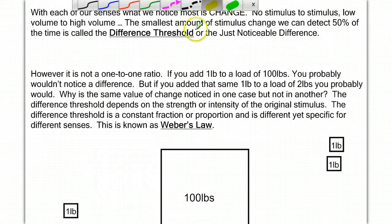The next term we have to be aware of is called the difference threshold. What's interesting about our senses is that what we notice most is change. Not stimulus to stimulus, a change like no stimulus to having stimulus or low volume to high volume. The smallest amount of stimulus change that we can detect 50% of the time is called our difference threshold, or the just noticeable difference.